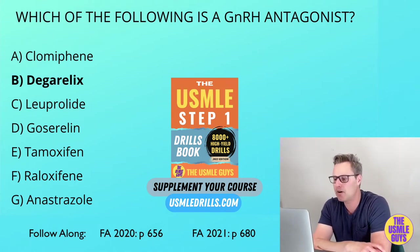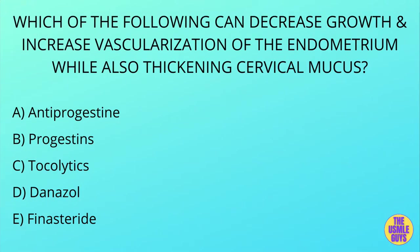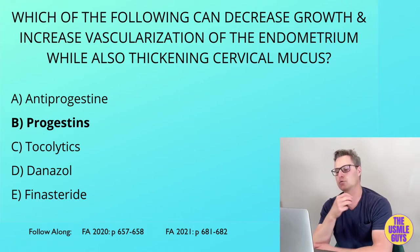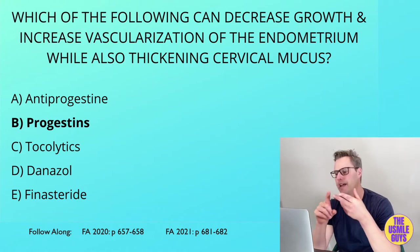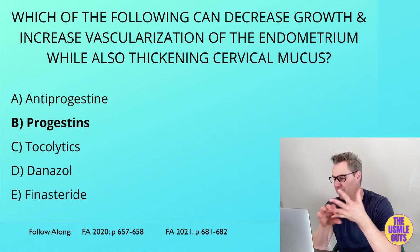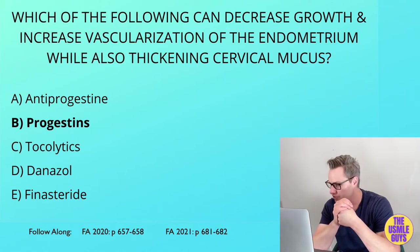Let's do our next multiple choice question — go ahead and hit that pause button, figure this one out, and then come on back. The correct answer here is B: progestins. Progestins are a class of medications that includes drugs like levonorgestrel and medroxyprogesterone. These work by binding to progesterone receptors. They can thicken cervical mucus, decrease the growth, and increase the vascularization of the endometrium.